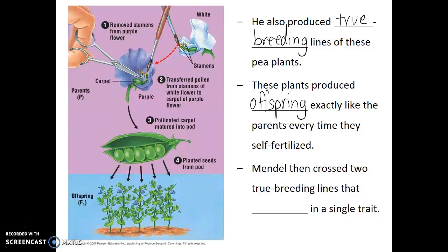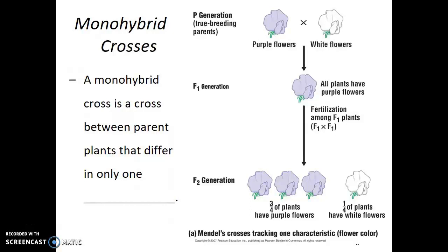He always made sure he was starting with two true breeding lines. But then he asked: what happens if I cross these two? He would cross two true breeding lines that differed in a single trait. That trait he was looking at was flower color. He used the pollen from one to fertilize the eggs of the other, planted those offspring, and found that always the offspring of those two true breeding lines had purple flowers. This type of genetic cross is known as a monohybrid cross — a cross between parent plants that differ in only one characteristic.